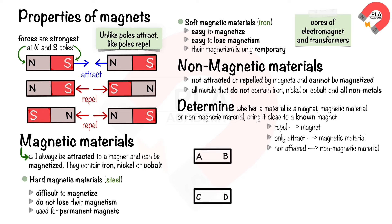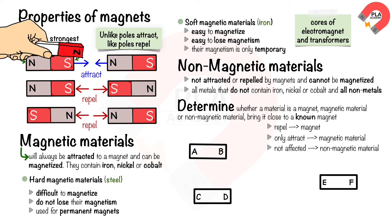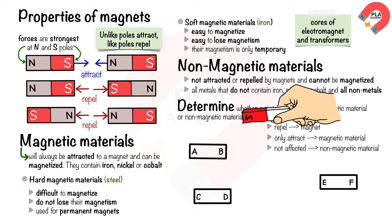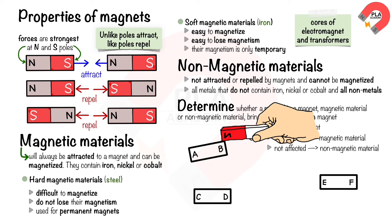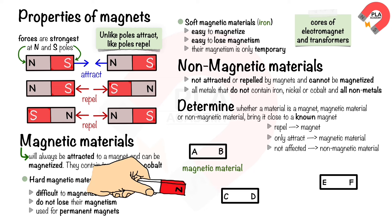For example, there are three unknown metal bars and a known magnet. When a north pole is brought near end A they attract, and when brought near end B they attract again — this shows bar AB is a magnetic material. When a north pole is brought near end C they repel — this shows bar CD is a magnet and end C is the north pole.